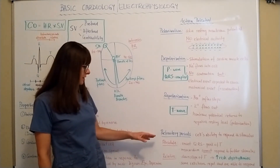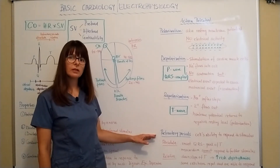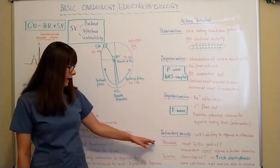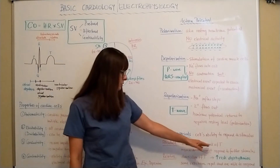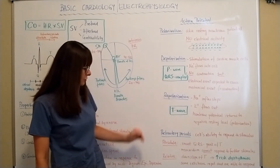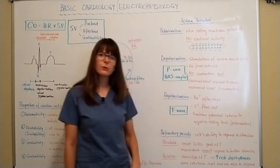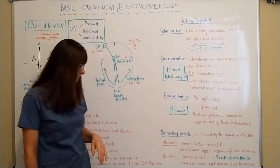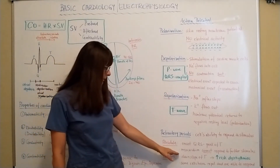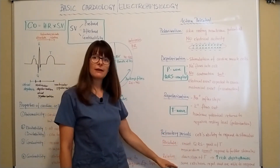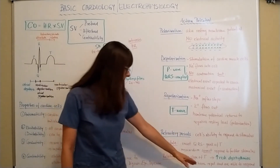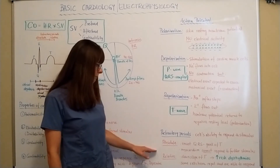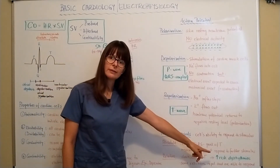Other important principles are the refractory periods — a refractory period is the cell's ability to respond to a stimulus, and we must distinguish between absolute and relative. The absolute refractory period happens from the onset of the QRS to the peak of the T wave, where the myocardium cannot respond to a further stimulus because it is currently in the depolarization phase and hasn't yet repolarized. The relative refractory period occurs on the down slope of the T wave; some cells may have repolarized and can respond, and when another beat hits at this time, there is a high risk for dysrhythmias.